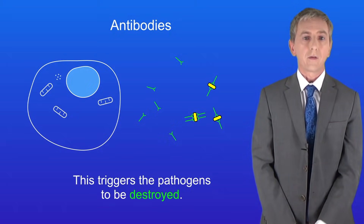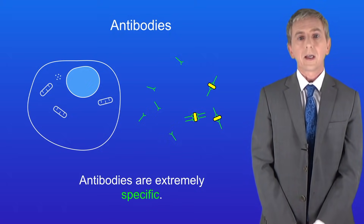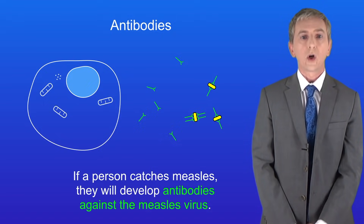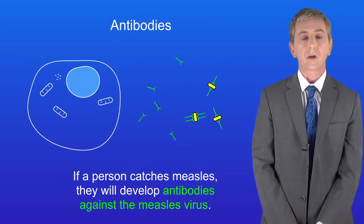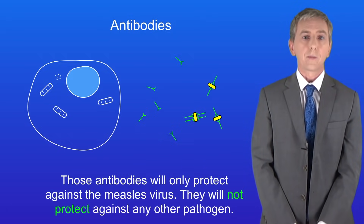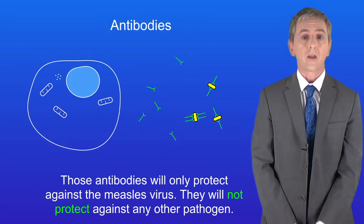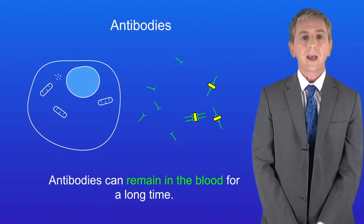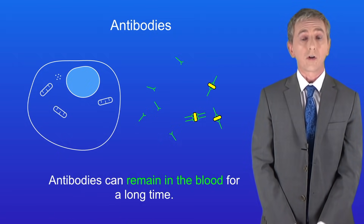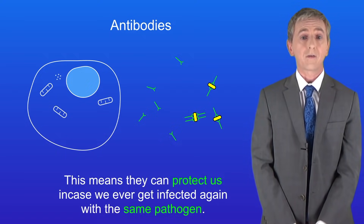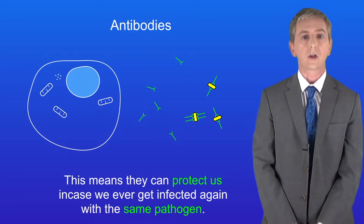There are two key facts about antibodies. Firstly antibodies are extremely specific. For example if a person catches measles they'll develop antibodies against the measles virus, but those antibodies will only protect against the measles virus — they will not protect against any other pathogen. Secondly antibodies can remain in the blood for a long time, which means they can protect us in case we ever get infected again with the same pathogen.